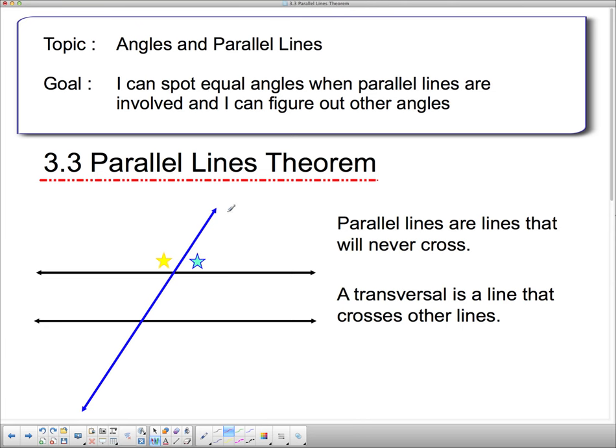A transversal is this blue line. It's a line that cuts across a pair of parallel lines. So if these are parallel, remember we mark things parallel with two little tick marks like that. So if those two lines are parallel, this is a transversal because it cuts across it. So getting that out of the way, I'm just going to do a quick little demonstration here with these two parallel lines on what angles are the same.